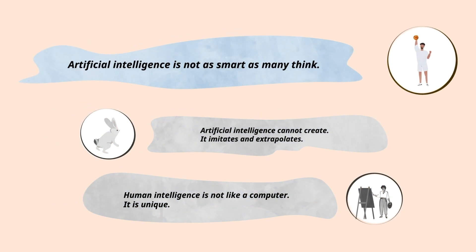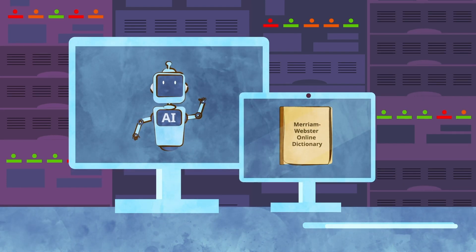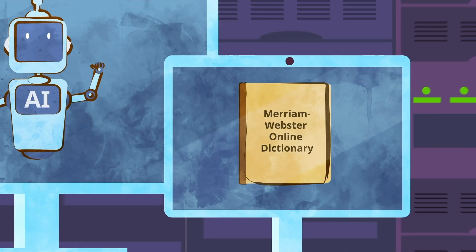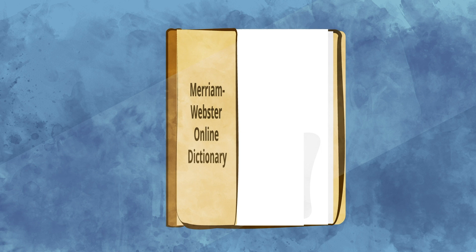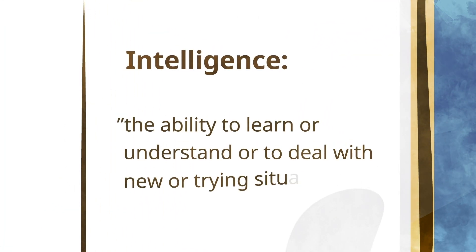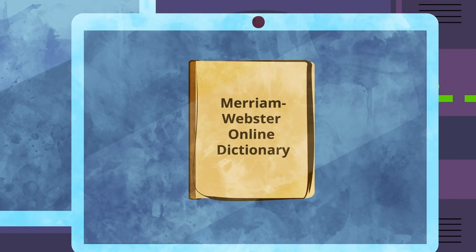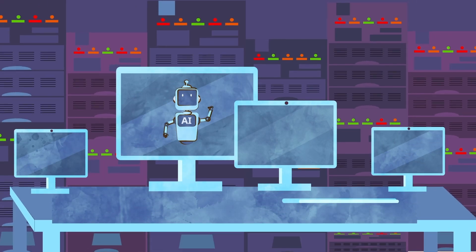Number one, artificial intelligence is not as smart as many think. At its most basic level, artificial intelligence isn't intelligent, at least not as the Merriam-Webster Online Dictionary defines it. Intelligence is the ability to learn or understand or to deal with new or trying situations. Except in a metaphorical sense, computers don't learn or understand to deal with any situation.